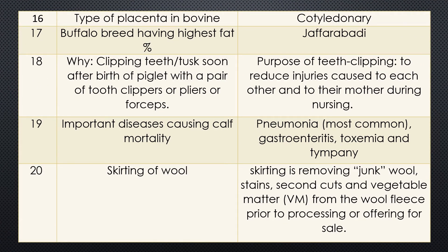Question sixteen: Type of placenta in bovine. This is an important question. The type of placenta in bovine is cotyledonary. There are separate cotyledons — a ball-like structure. This is important for a clinician when handling a case of retention of placenta, as they have to remove each cotyledonary attachment with the placenta one by one.